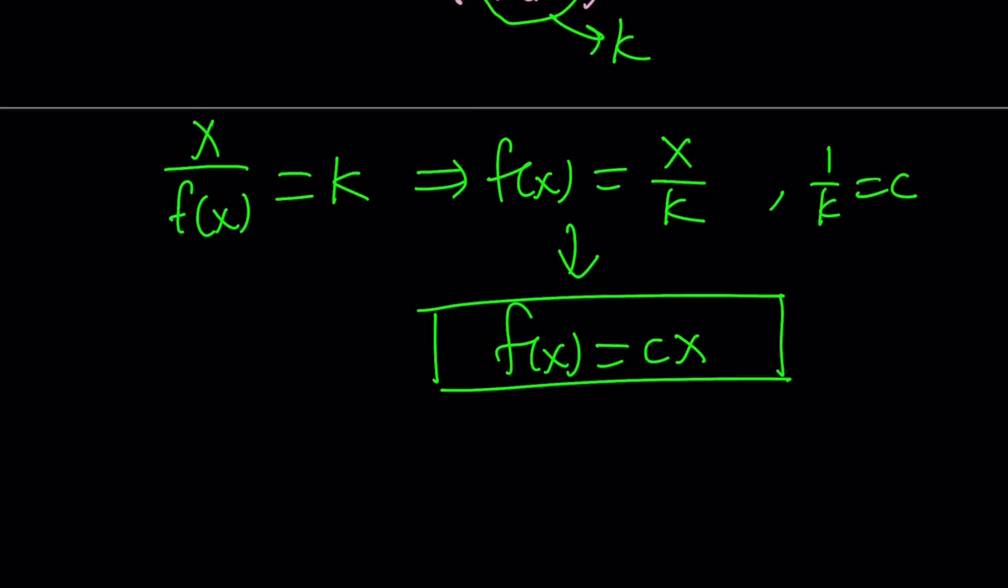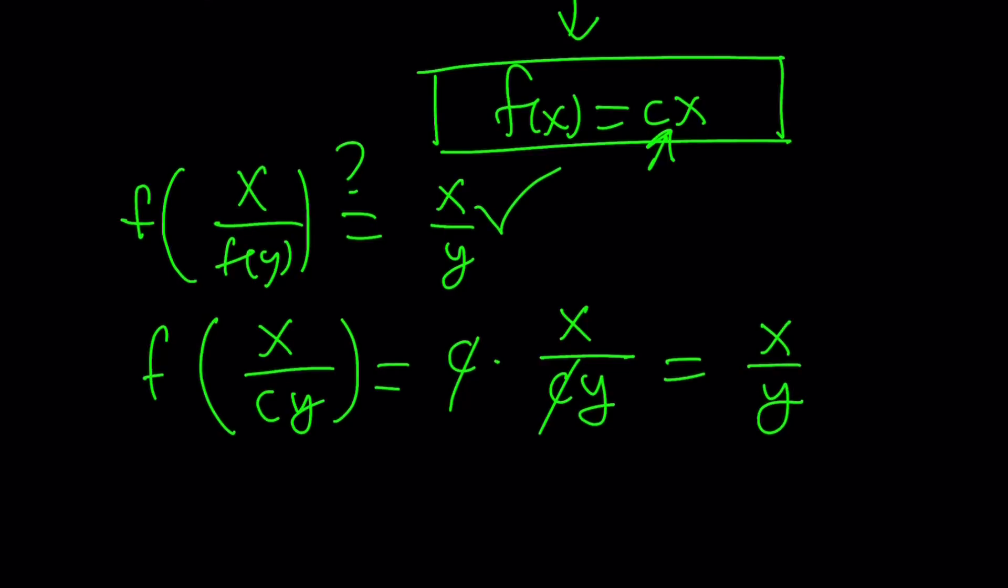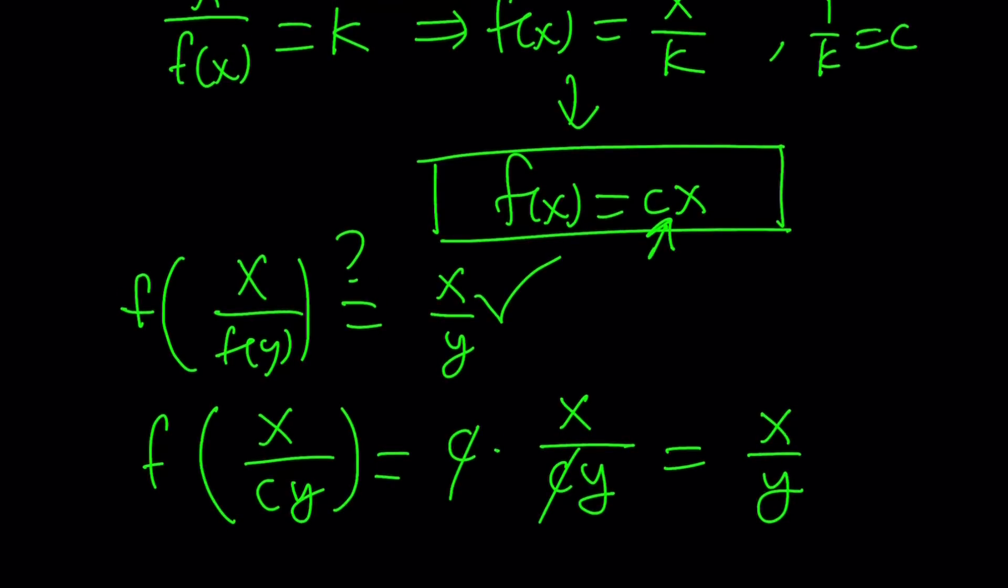But anyways, that's a possible solution. Let's go ahead and sub it anyways. So f of x over f of y is supposed to equal x over y. Is that possible? Let's check it out. What is f of x over f of y? f of y is c y. f of x over c y, by definition of f, it is c times the argument. And that is equal to, if c does not equal 0, of course, it's equal to x over y. So it kind of checks. So f of x equals cx works. And that is the only equation we can find from here. So that must be the only solution.